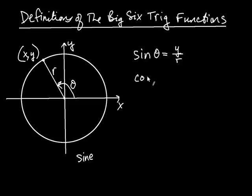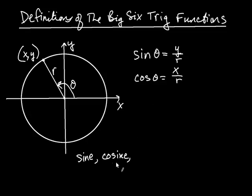Cosine of theta, abbreviated cos, is defined to be x over r. You might notice these names are very similar — sine and cosine. The 'co' is short for complementary, and there's a close connection between sine and cosine having to do with complementary angles — angles that add to 90 degrees. We'll come back to that later. All we need to know now is that cosine of an angle is the x coordinate divided by r.